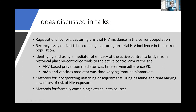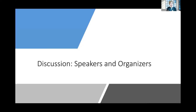Summarizing: we have the idea of a registrational cohort capturing pretrial HIV incidence in the current population. A recency assay at trial screening also captures pretrial HIV incidence. The concepts of using mediators of efficacy for the active control to bridge from historical placebo controls — where in the ARV-based setting the mediator is time-varying adherence, and in MAB and vaccines it's a time-varying immune biomarker. We're also discussing methods for incorporating matching or adjustments using baseline and time-varying covariates representing HIV exposure risk, and methods that formally combine all these different external data sources.